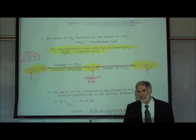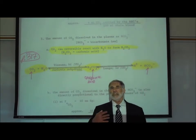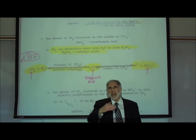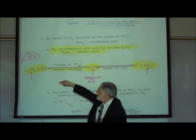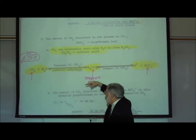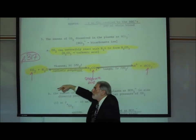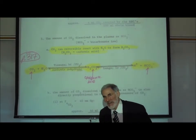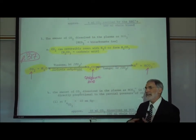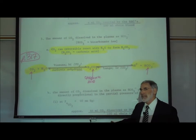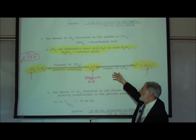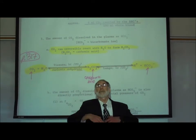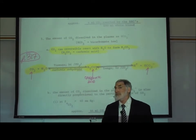However, in the lungs the exact opposite happens. When you exhale carbon dioxide out of your lungs, the carbon dioxide level in the bloodstream is going down. When carbon dioxide levels decrease in the blood, the reaction tends to go in the reverse direction — hydrogen ion combines with bicarbonate, forming carbonic acid, which then breaks apart into CO₂ and water, so that more CO₂ can go out of the bloodstream and into the lungs.